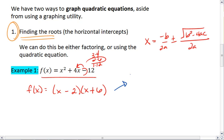We can check this off to the side. And we find that we get x squared plus 4x minus 12, which is in fact what we started with.